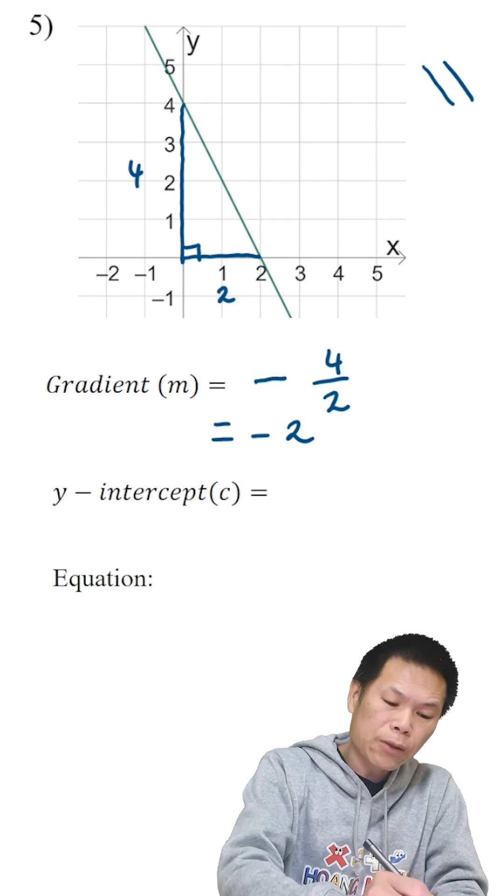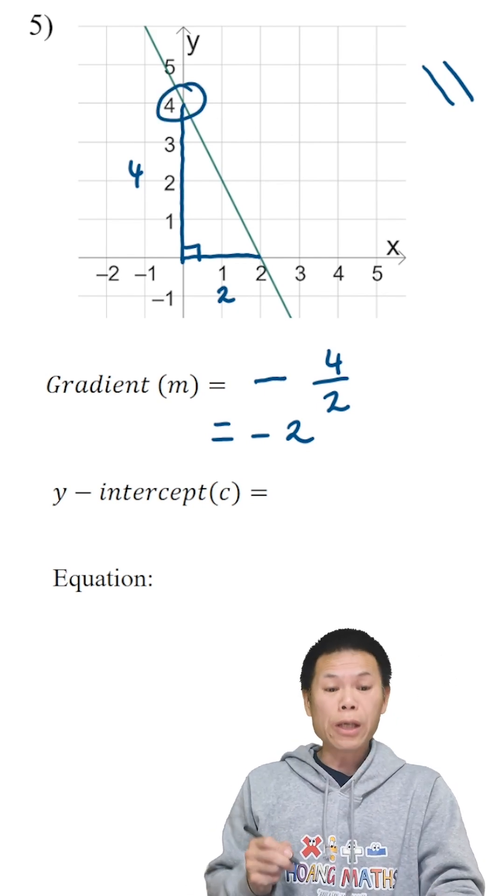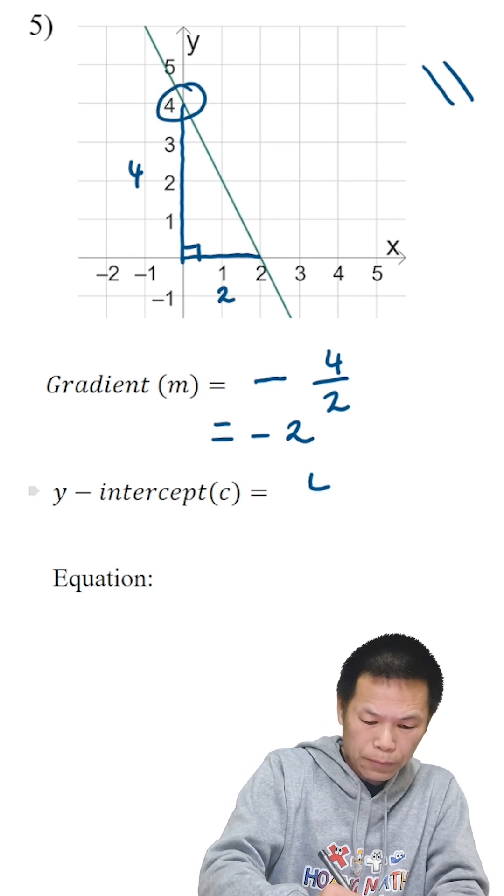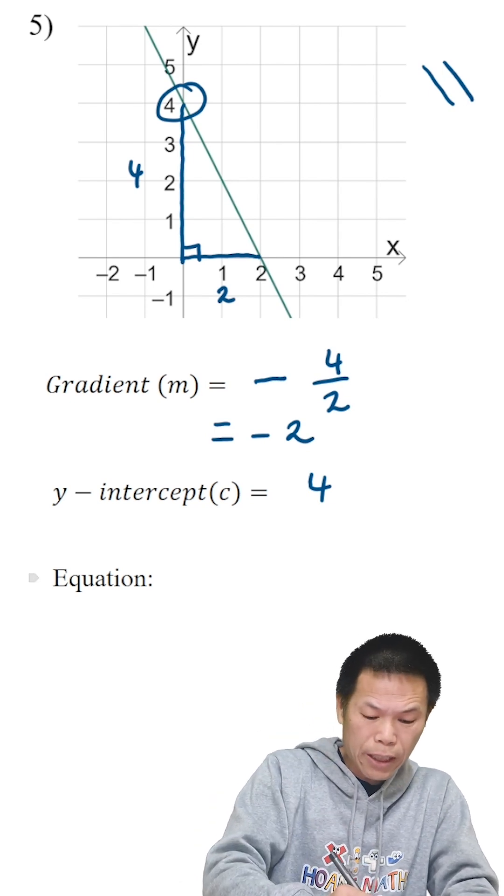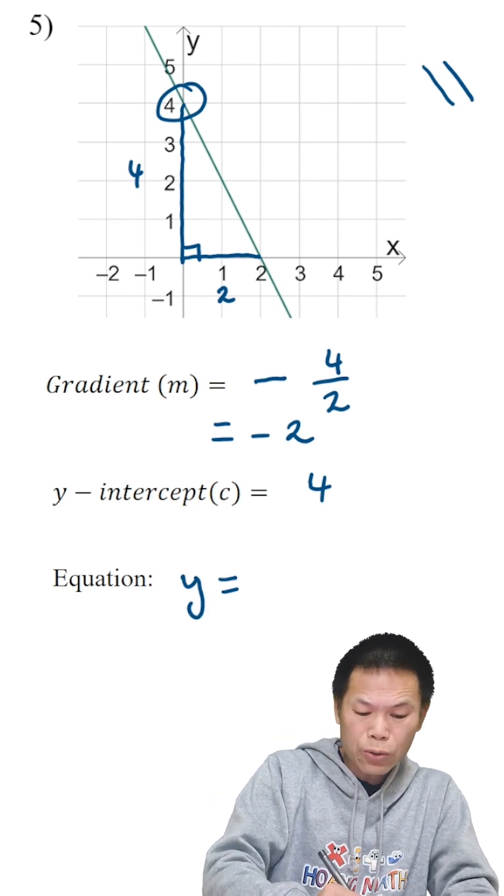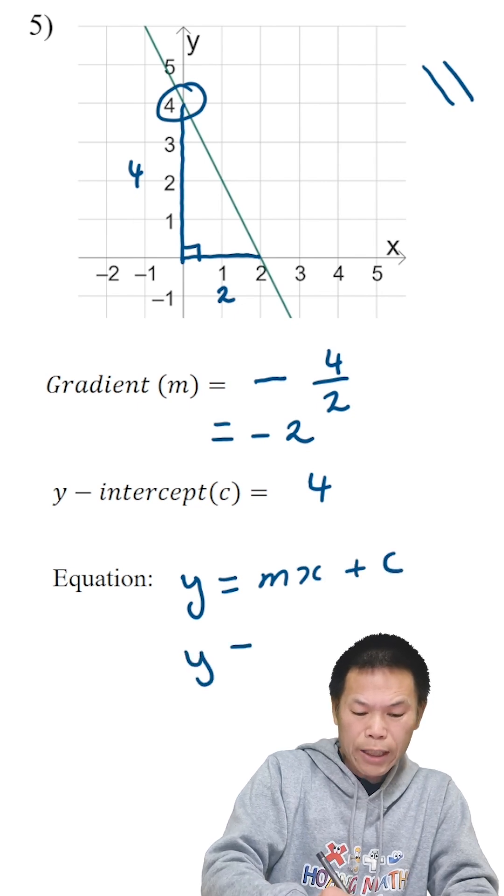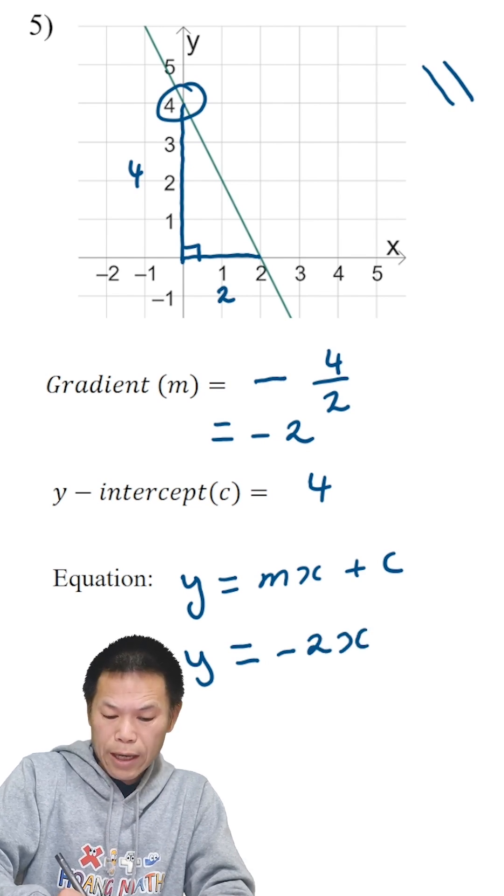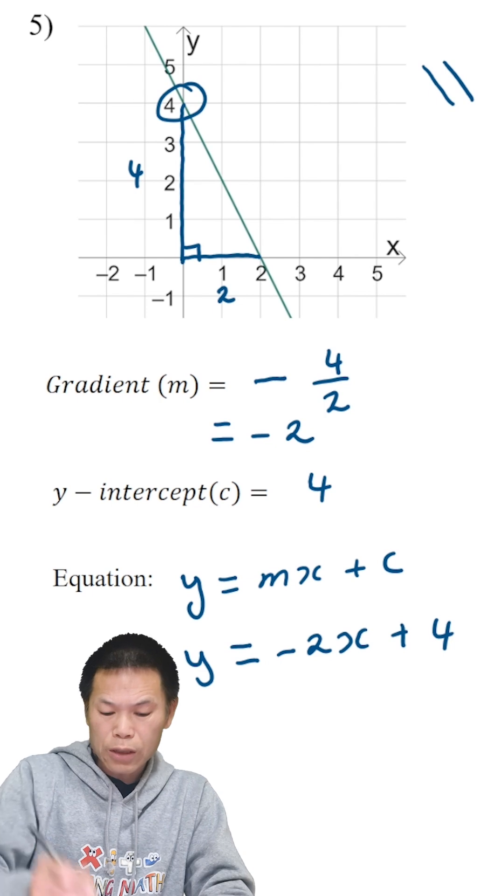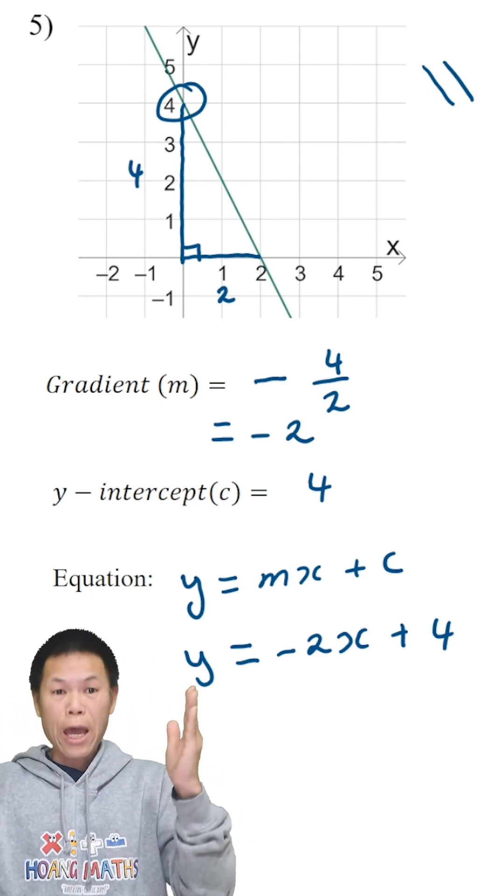The y-intercept is where you cut the y-axis, so c equals 4. And the equation of this straight line is y equals mx plus c. So that is y equals m is negative 2, therefore negative 2x plus c, which is 4.